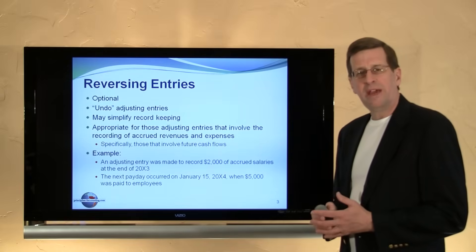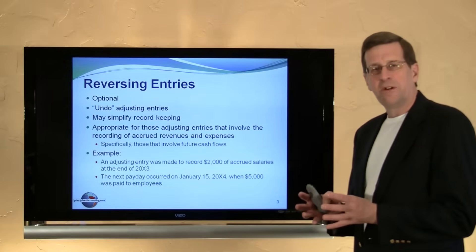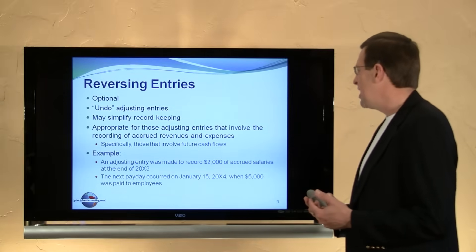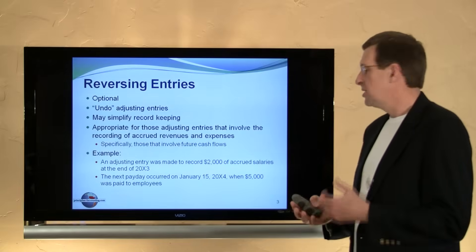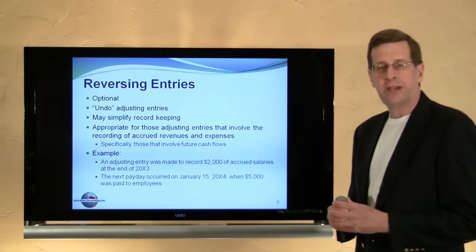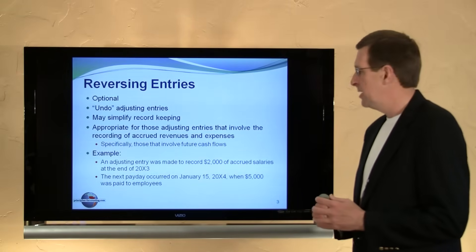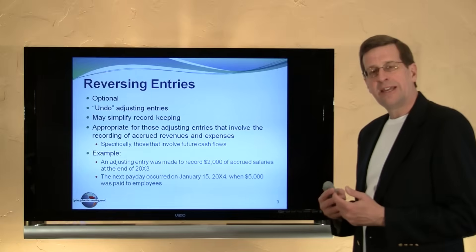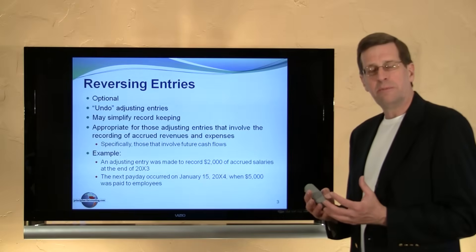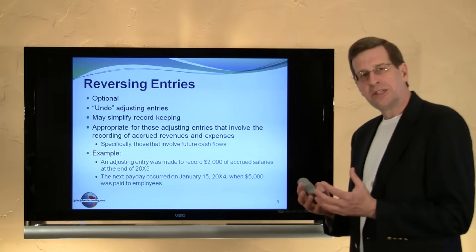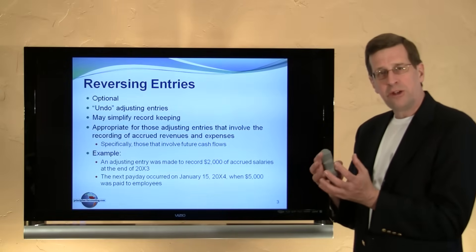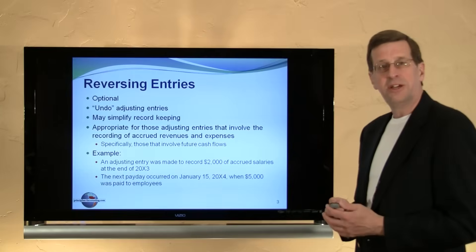By way of example, assume we have a payroll scenario so that at the end of the first year, 20X3, an adjusting entry was made to record $2,000 of accrued expenses for salaries. We owed our employees at the end of 20X3 $2,000 for work already rendered. The next payday is not until January 15th of the next year, 20X4, at which time $5,000 is going to be paid to employees — $3,000 earned during 20X4 and $2,000 earned in the previous year, 20X3.